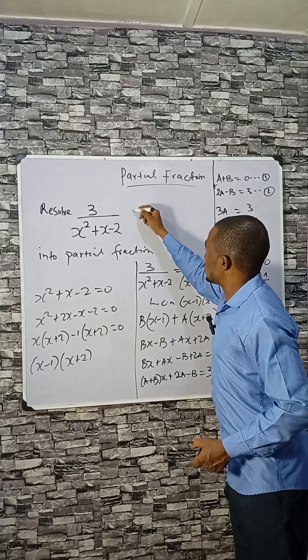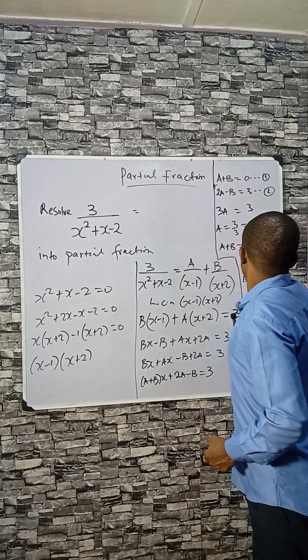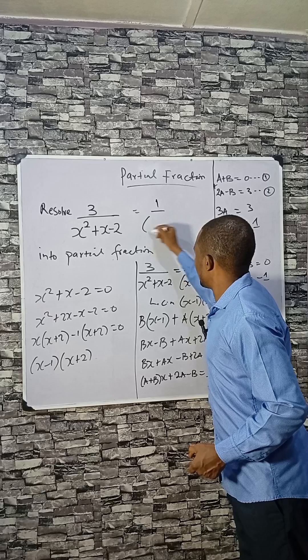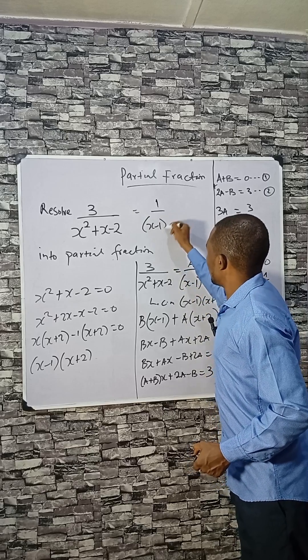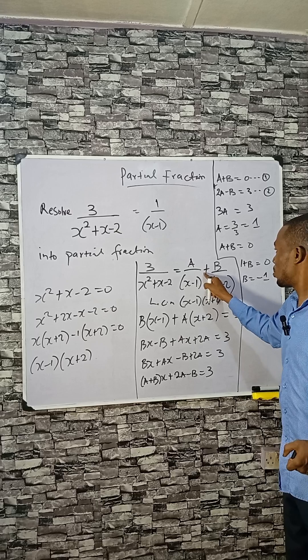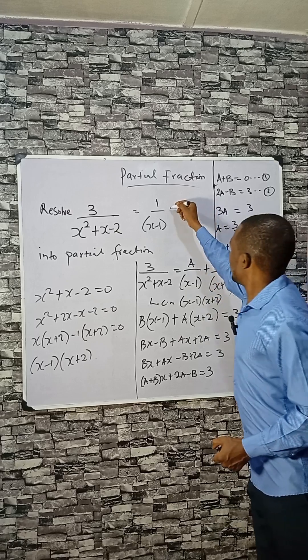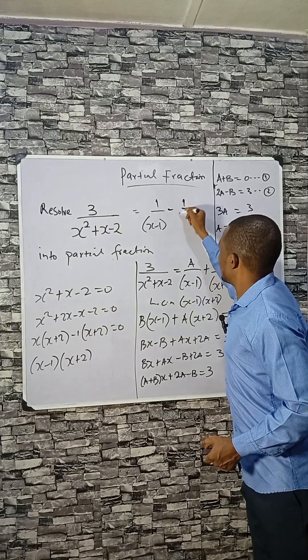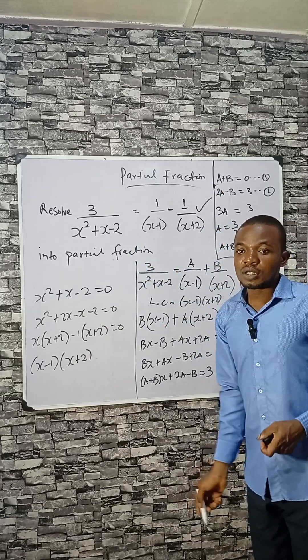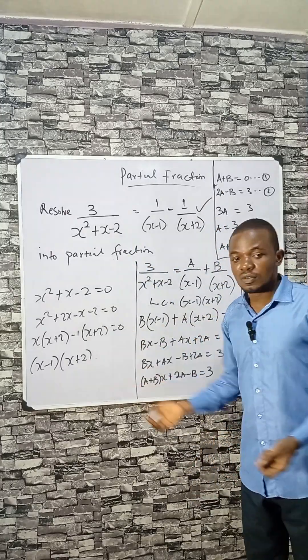So we can rewrite this equation as: the answer here is A which is 1 divided by x minus 1, and for B, since B is negative already, this will be minus 1 divided by x plus 2. So this is the answer for this.